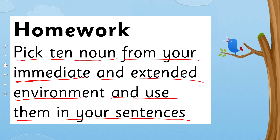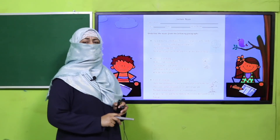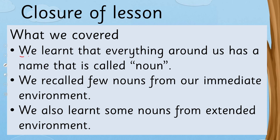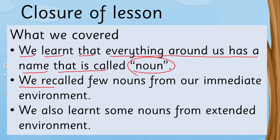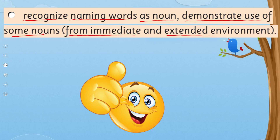You can consider examples from a far-off environment as well for your homework. I'm giving you a worksheet. Fellow teachers, the worksheet, lesson plan, and PowerPoint presentation links are given — you may click, download, and give a printed worksheet to students for practice. Students, you will underline the nouns from the following paragraphs — there are three paragraphs. So what we covered today: everything around us has a name that is called a noun. We recalled nouns from our immediate environment and also learned some nouns from the extended environment, thereby achieving our SLO — to recognize naming words as nouns and demonstrate use of some nouns from immediate and extended environment.